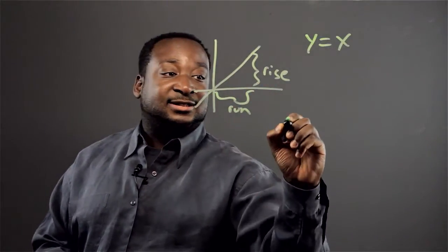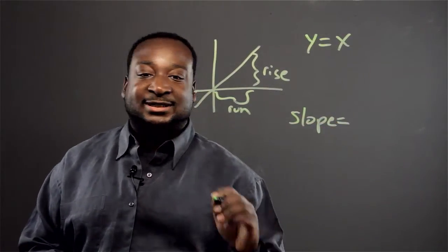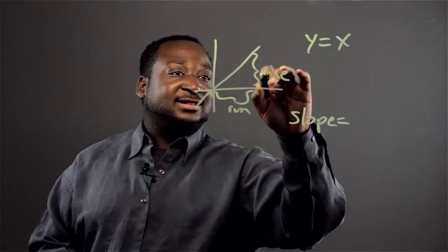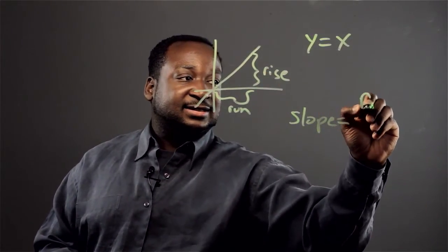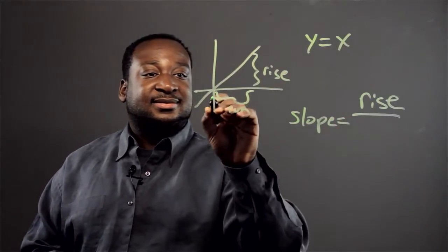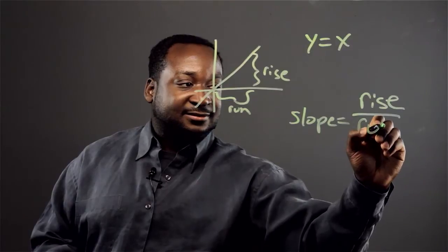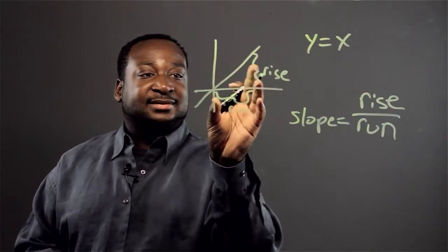So the slope is equivalent to this number, the rise, over that number, the run, the horizontal.